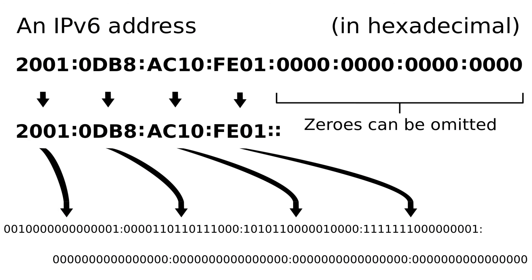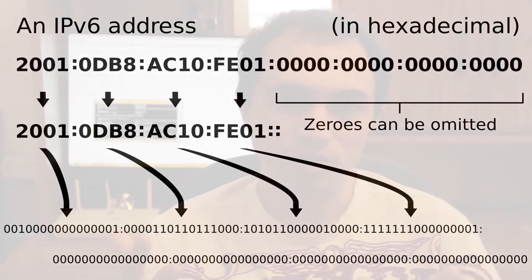IPv6 is a newer version of IP which isn't very widely used yet. It consists of 128 bits, which are translated not to decimals but to hexadecimals. That means you don't count from zero to nine — you count from zero to F: zero, one, two, three, four, five, six, seven, eight, nine, A, B, C, D, E, F. That's hexadecimal — it's a base-16 numbering system, which goes higher than base-10.